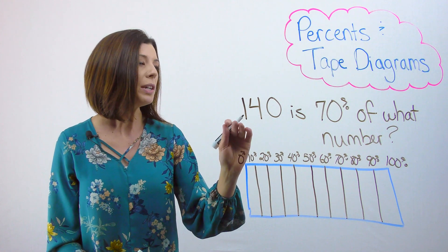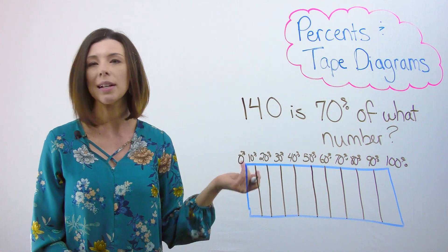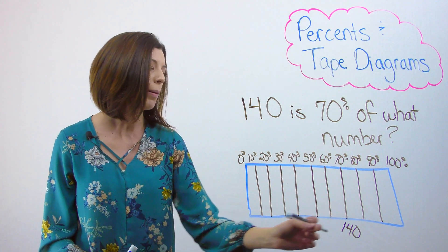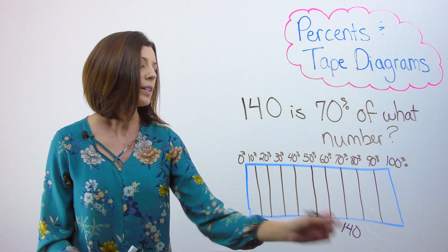Next, let's plug in what we know. So we know that 140 is 70%, so I'm going to go ahead and put that right here. If I know that this much of the bar represents 140,